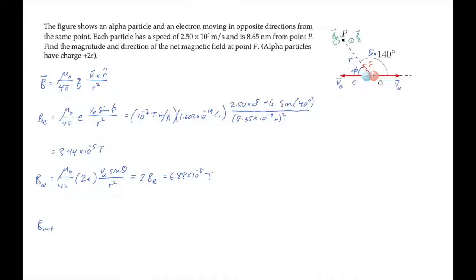The net field, because they both point in the same direction, is the sum of those two, which works out to 1.03 times 10 to the minus fourth tesla, directed out of the screen.